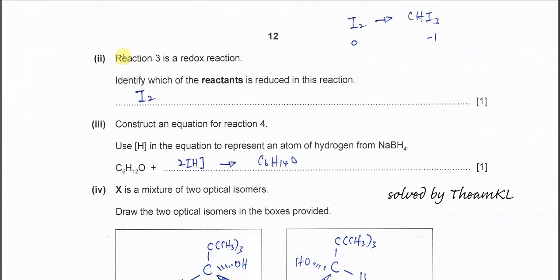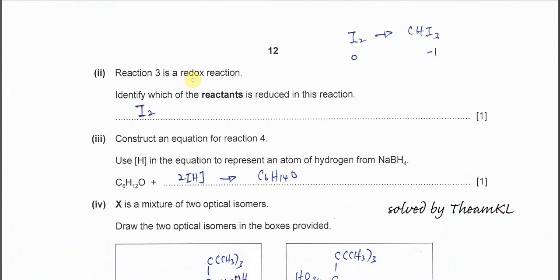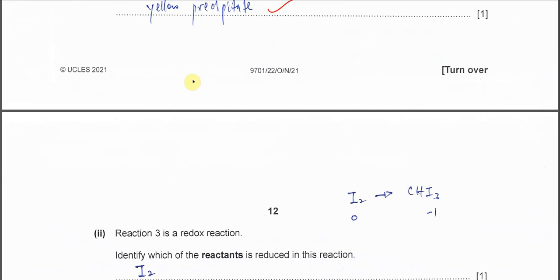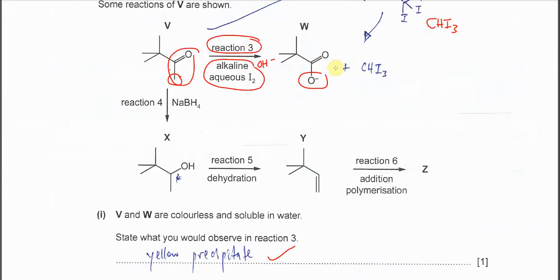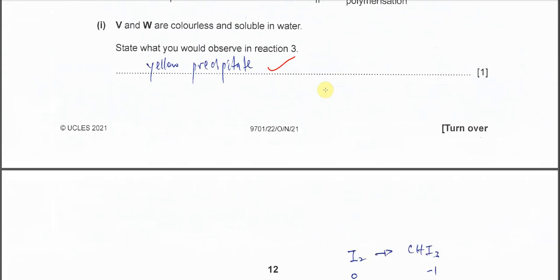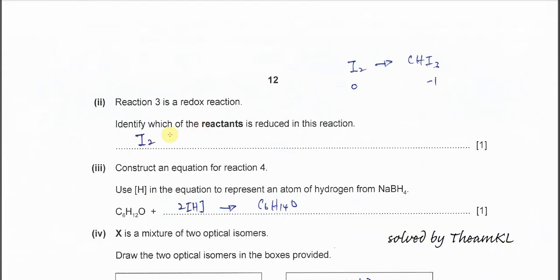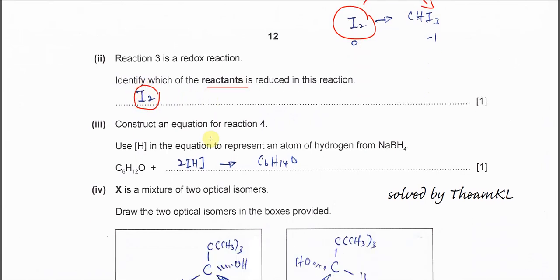Part F. Reaction 3 is a redox reaction. Which of the reactants is reduced? Very easy. Iodine after reaction forms iodoform. So it's from 0 to negative 1. So iodine is the one that's being reduced, obviously.